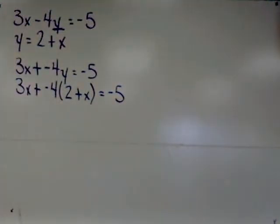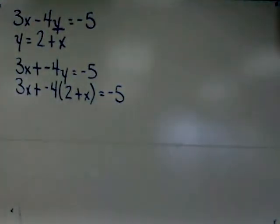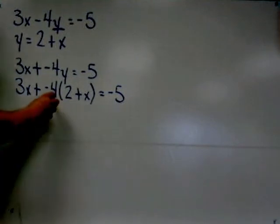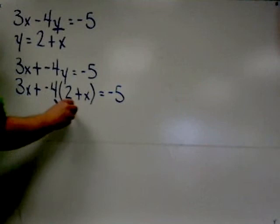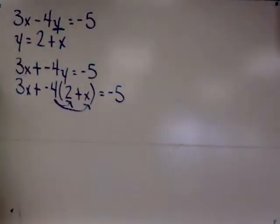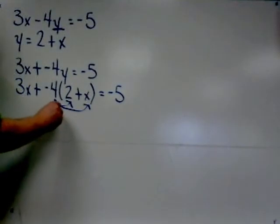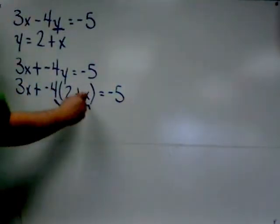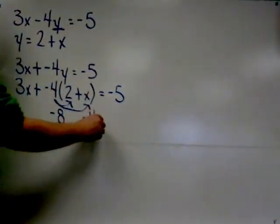This means once again, we must use the distributive property distributing the negative 4. When we distribute the negative 4, the negative 4 carries through to both the 2 and the x. So I have negative 4 times 2, which is negative 8, and negative 4 times x, which is negative 4x.